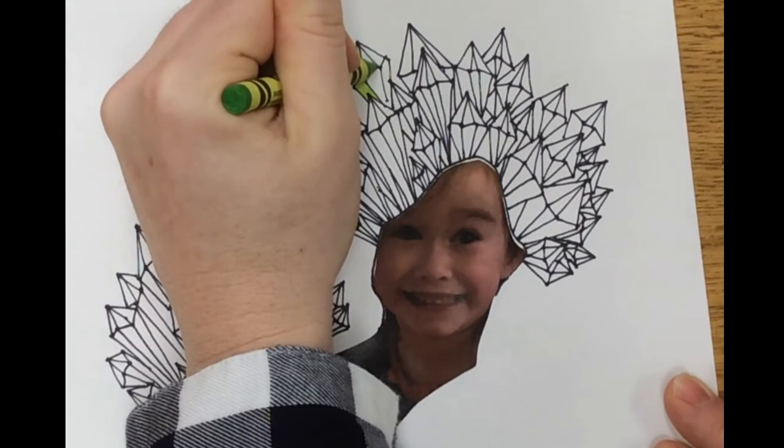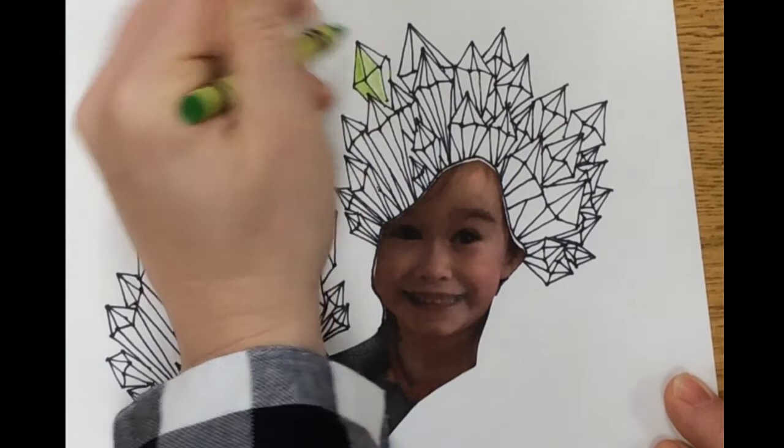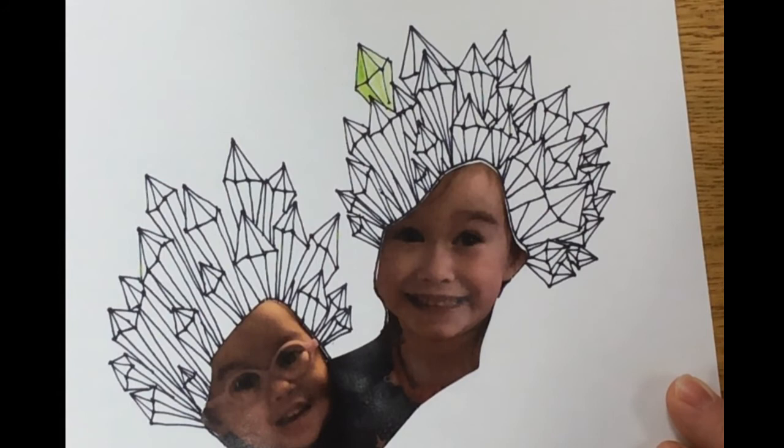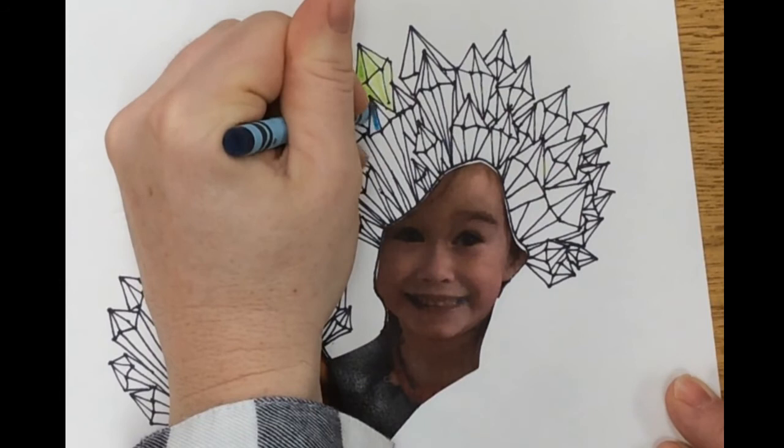So what you're going to do is on the very left side you're going to push as hard as you can and this is going to create the darkest value. Then the middle section you're going to press a little bit lighter so you're going to create a medium value, and then the right side of the crystal you're going to press as light as you can. So you're using one crayon and on the left you're pushing as hard as you can, in the middle you're doing medium pressure, and on the very right side of the crystal you're going to keep both those areas very light.